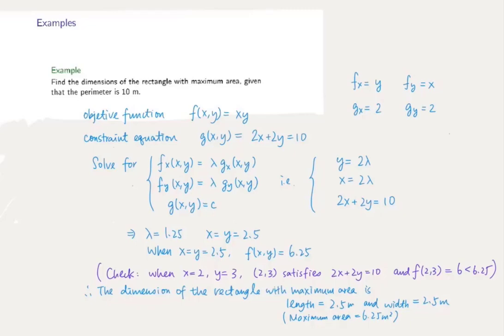Therefore, the point which we get is a maximum point, and this means that the dimension of the rectangle has a maximum area when the length is 2.5 meters and the width is 2.5 meters. This gives a maximum area of 6.25 meters squared.